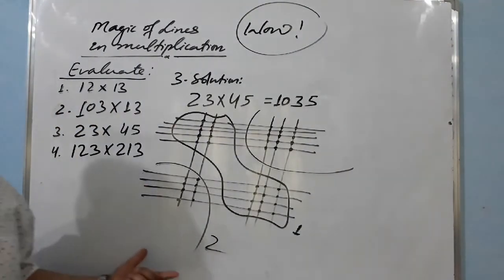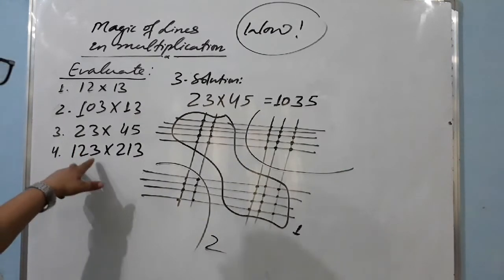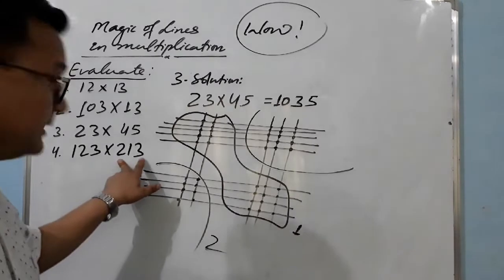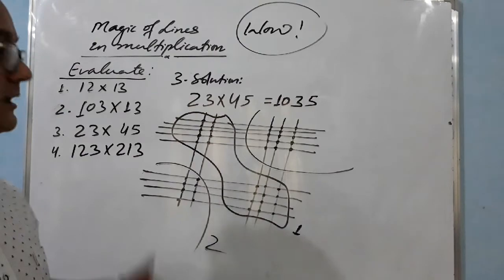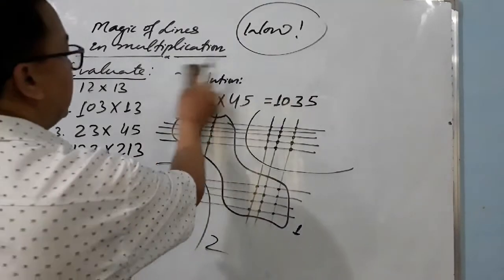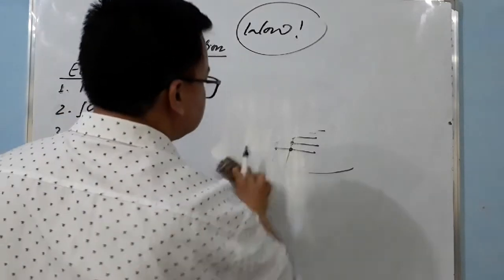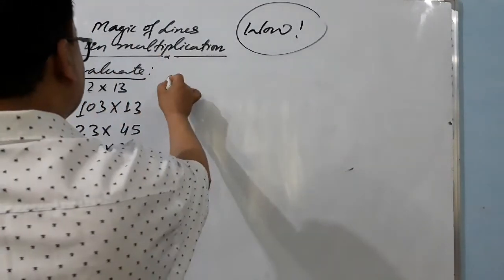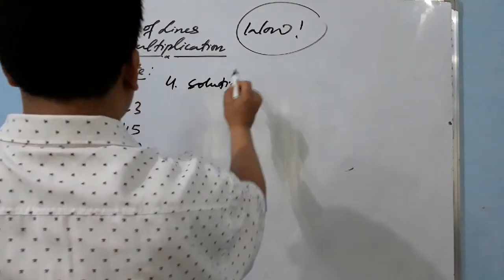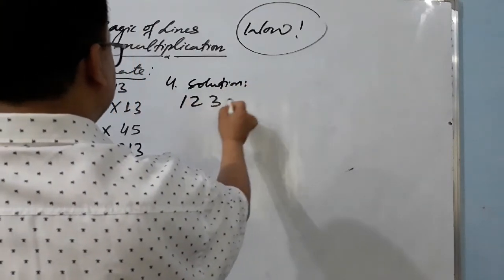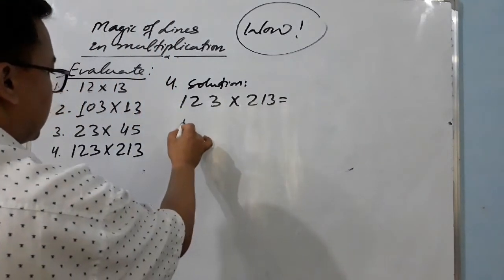Now, the last example: what if you have three digits in each number? Here we have 123 times 213 — three digits in each. Let's see how to multiply with the help of lines. This is question number four: solution of 123 times 213.